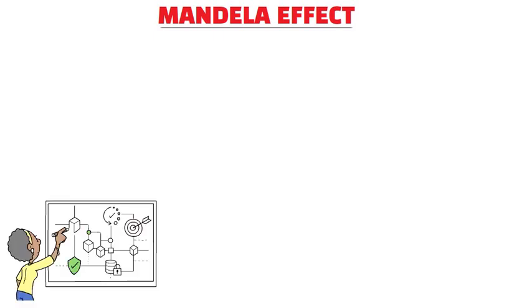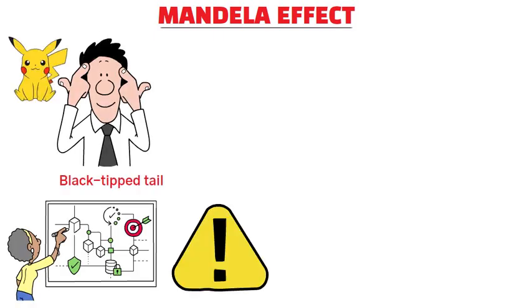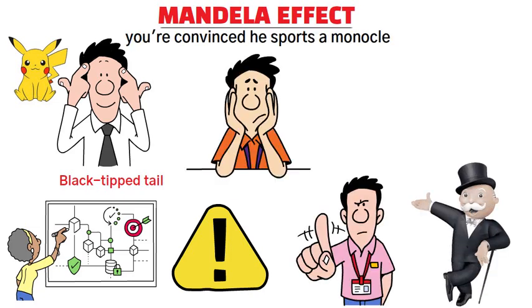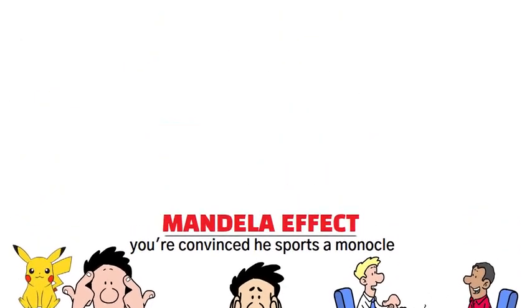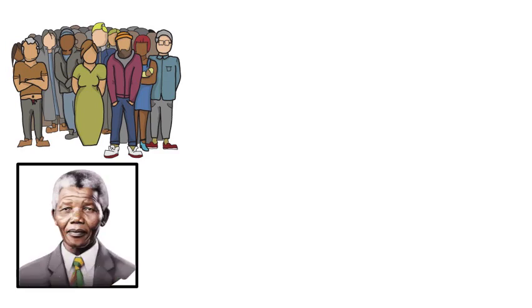Mandela Effect. Picture this. You remember Pikachu with a black-tipped tail, only to find out you're wrong. Or the Monopoly man. You're convinced he sports a monocle, but he doesn't. These aren't just isolated cases of forgetfulness. We're talking about mass memory glitches, like a whole crowd swearing Nelson Mandela died in the 1980s.